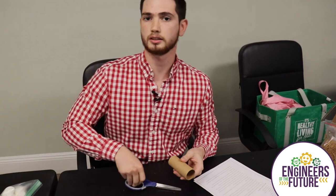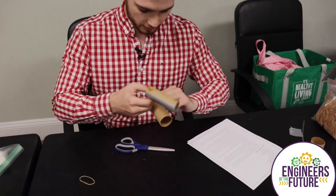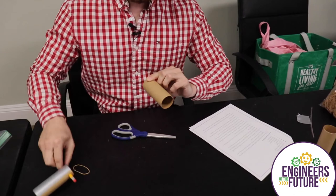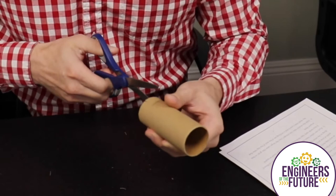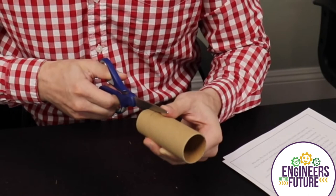So we're going to, again, measure the width of our index finger. And we are going to, again, cut two slits parallel to each other, just on the other side of the toilet paper roll. Let's get this first one that I did a little bit longer. Perfect. Great.